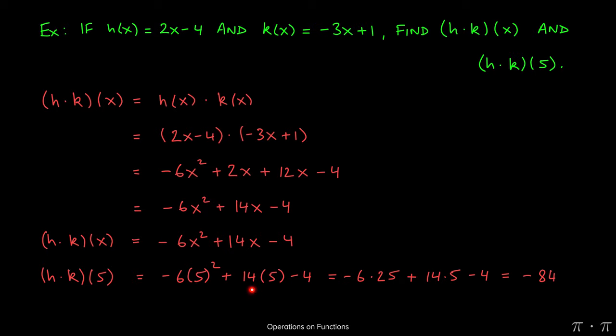So 5 times 5 will yield 25. The -6 comes around. 14 times 5 is 70, and then we have a minus 4.